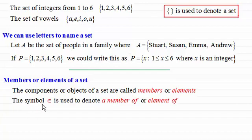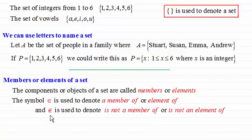And the symbol here is used to denote a member of or element of a particular set. And when you put a line through it, that symbol is used to denote is not a member of or is not an element of a particular set.